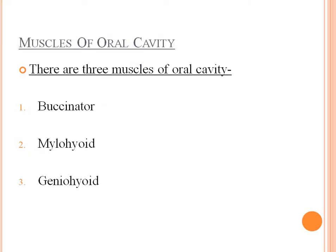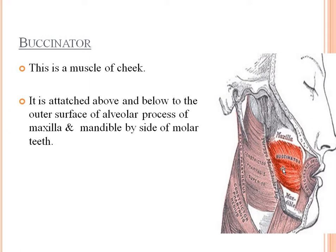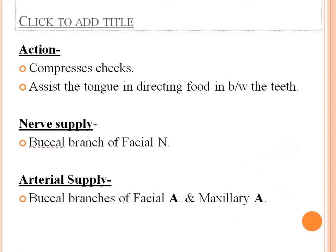There are three muscles of the oral cavity: the buccinator, the mylohyoid, and the geniohyoid. The buccinator is the muscle of the cheek. It attaches above and below to the outer surface of the alveolar process of the maxilla and mandible by the side of the molar teeth. Its action is to compress the cheek and assist the tongue in directing food between the teeth. Nerve supply is the buccal branch of the facial nerve. Arterial supply is the buccal branch of the facial artery and the maxillary artery.